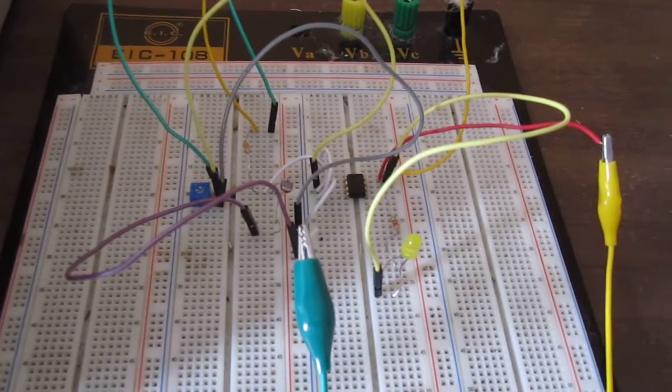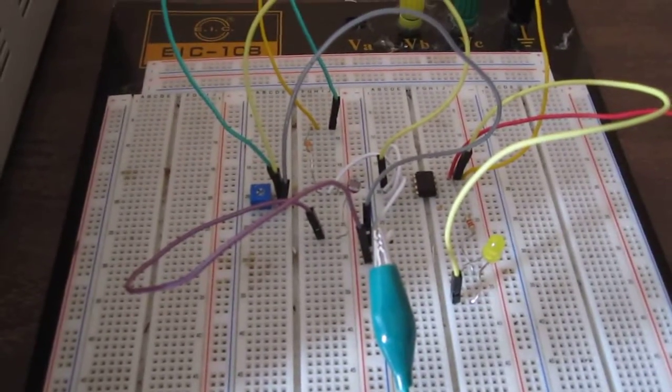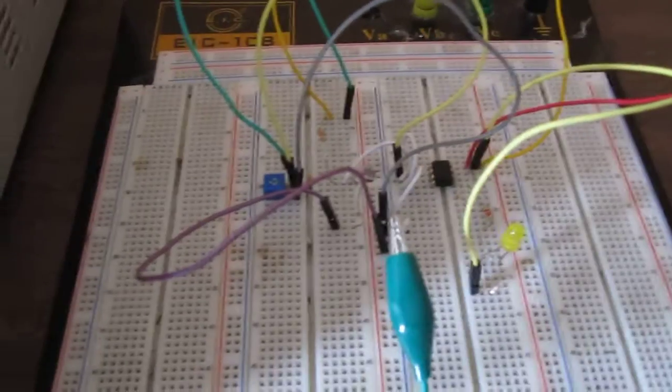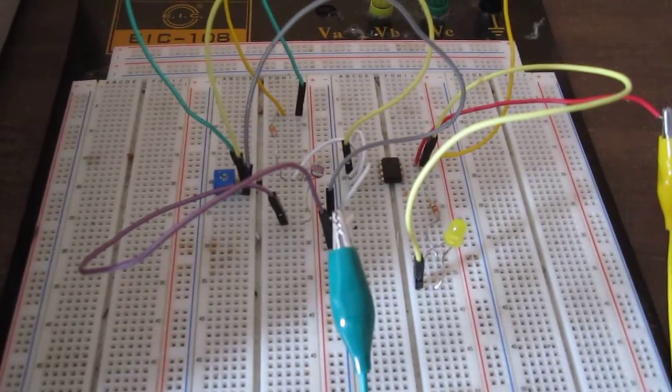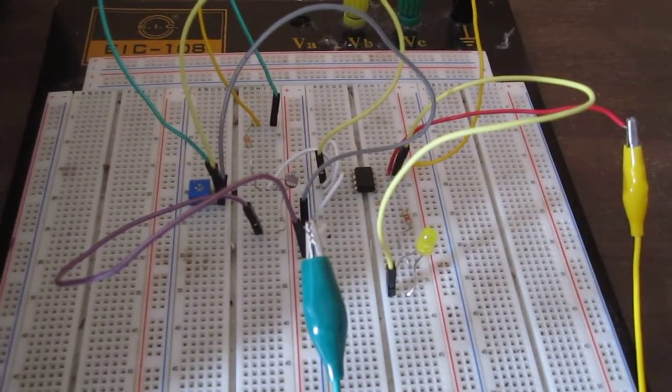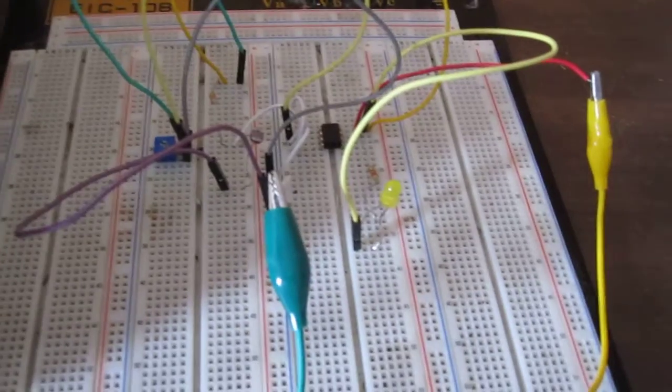How this works is the LM311 functions as a voltage comparator. It compares voltages at the inverted input and the non-inverting input. When voltage is greater at the inverted input, the output turns on.